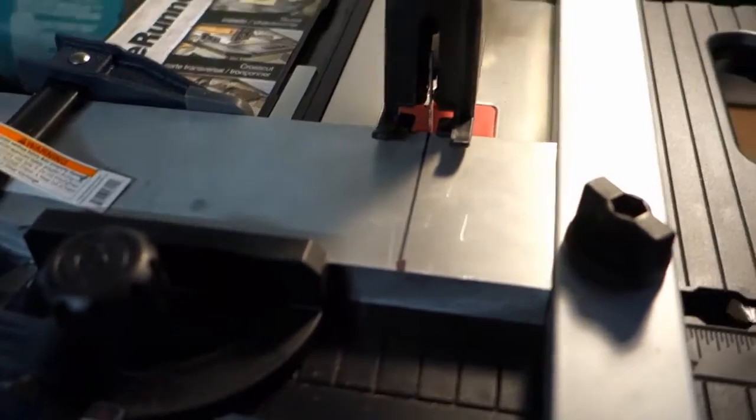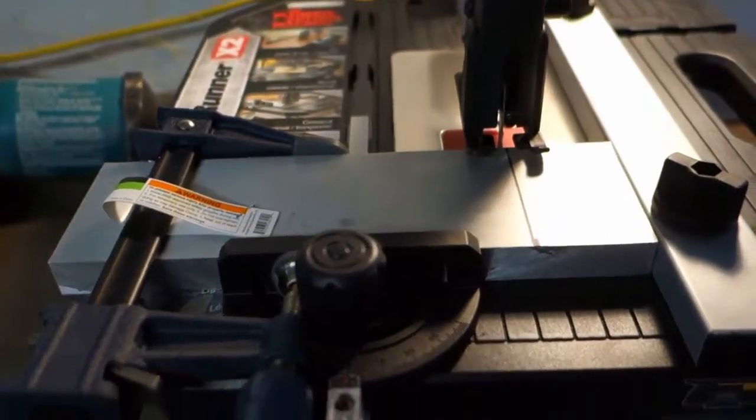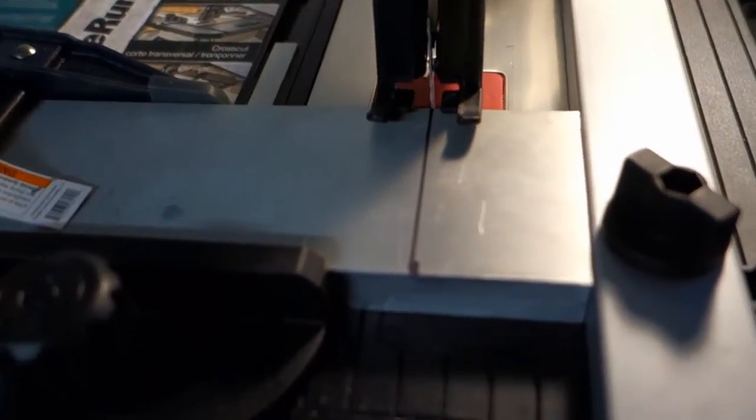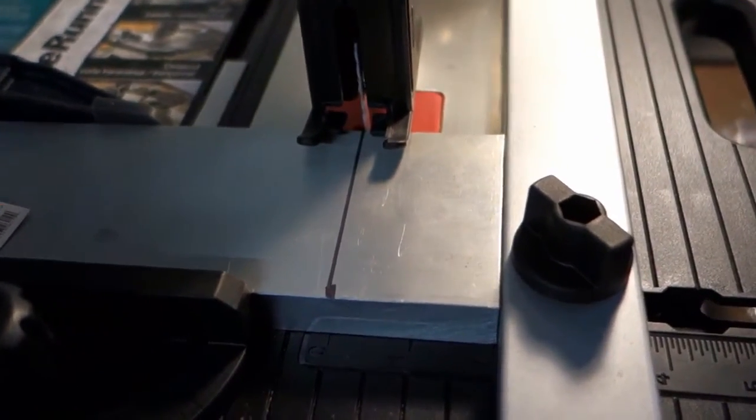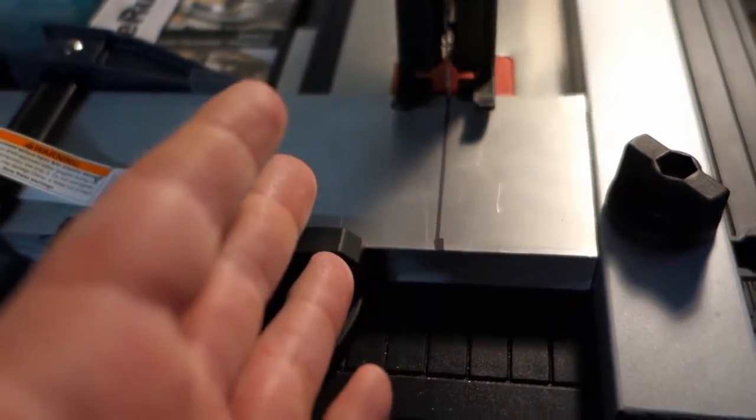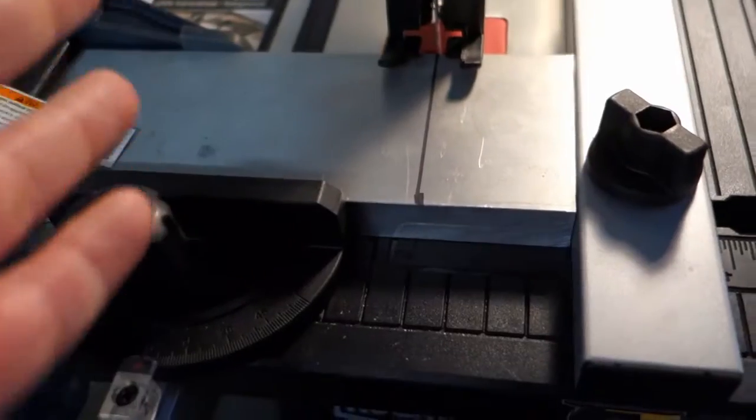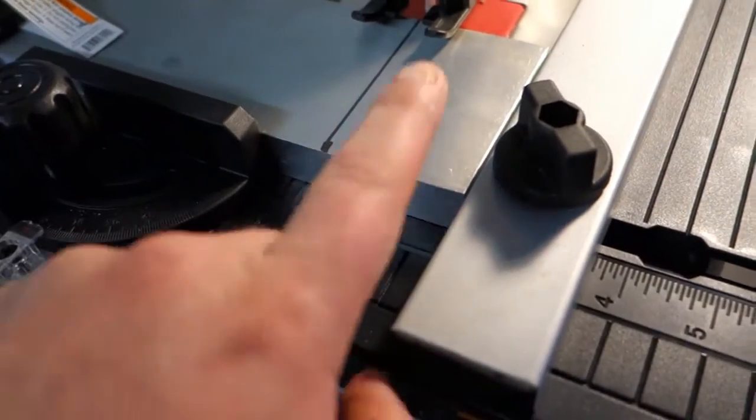What I'm using here to cut is my new toy, and this is a Rockwell Blade Runner X2. This is the second version. I have a jigsaw, but I've seen a lot of people mount it upside down into a table vise, but that just has cut off fingers written all over it. I've tried this a few times with some other metals, and let's see how this cuts through the aluminum.